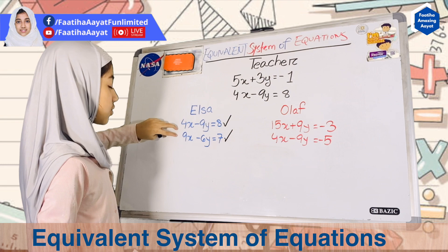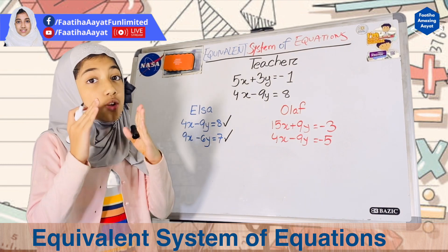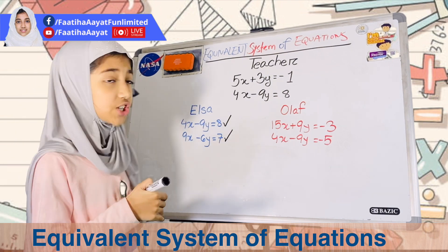The two linear equations, the simultaneous linear equations that Elsa got, is equivalent to the teacher's equations. Now let's check for Olaf.